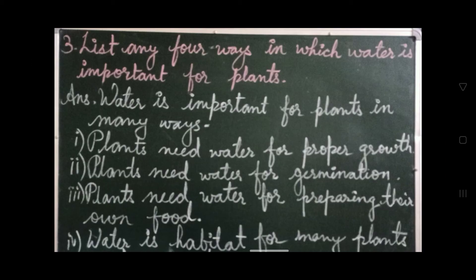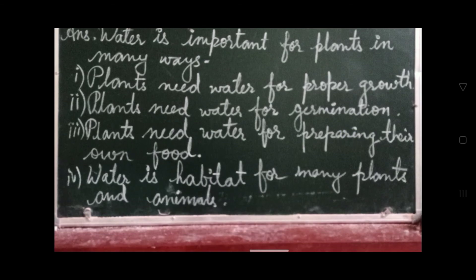Number 3: List any four ways in which water is important for plants. Answer: plants need water for proper growth. Plants need water for germination. Plants need water for preparing their own food. Water is habitat for many plants and animals.